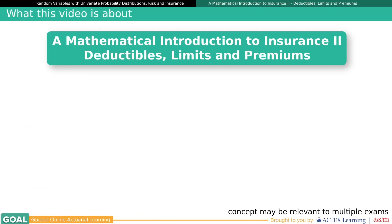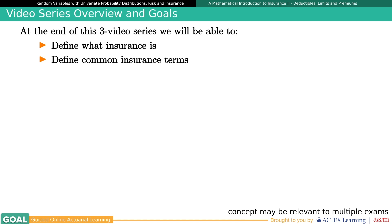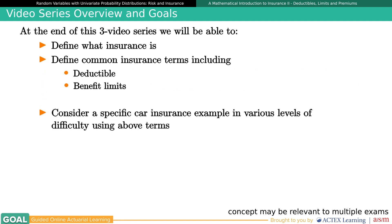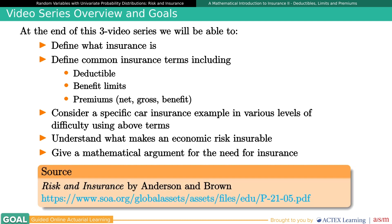Hi everybody. My name is Joe Sato, and in this second video we continue to mathematically explore some of the common definitions and terms related to insurance one might see on Exam P or other actuarial exams. The goal of this video is to consider the car insurance example from video one and add each of the three cases of deductible, benefit limit, and premiums to it. The expository paper by Anderson Brown, linked on slide two, titled Risk and Insurance, is excellent.